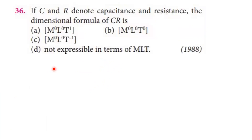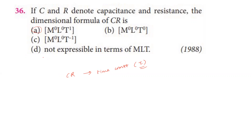Next question: if C and R denote capacitance and resistance, the dimension formula of C into R. CR is the time constant — the capacitive time constant τ. Time dimension formula is M⁰L⁰T¹. So this is the dimension formula of CR.